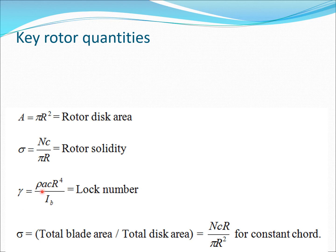One more important quantity is the lock number. Lock number is rho a c R to the fourth divided by I_b. We already defined I_b. Here rho is the density of air, a is the lift curve slope, c is the chord, and R is the radius. This is a number which tells you the ratio of aerodynamic forces divided by the dynamic forces. If you have a rotor code and want to set the aerodynamic forces to zero, you can set lock number to zero because density would be zero, meaning you are essentially in vacuum so only the dynamics would be functioning.